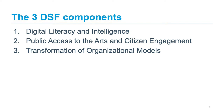The second component, public access to the arts and citizen engagement, is about helping you increase the digital discoverability of the arts and enhancing the digital citizen experience. It goes along with the goal of transforming the digital experience of citizens with the arts and increasing discoverability through digital technology. Lastly, the transformation of organizational models aligns with the goal of enabling digital transformation within the arts sector at the operational level — this component is all about business renewal and the renewal of digital capacity of organizations and groups.